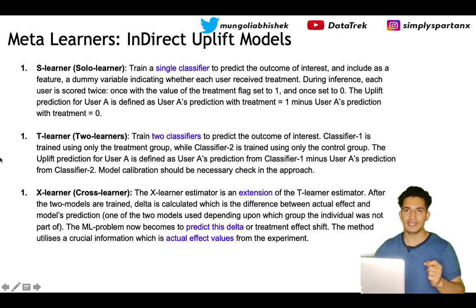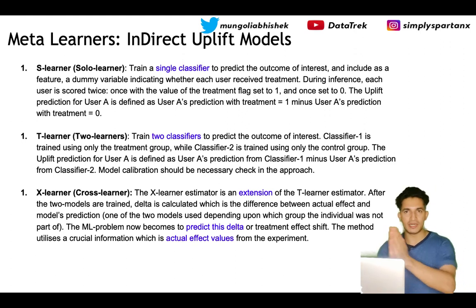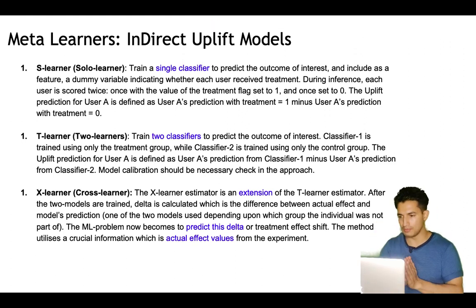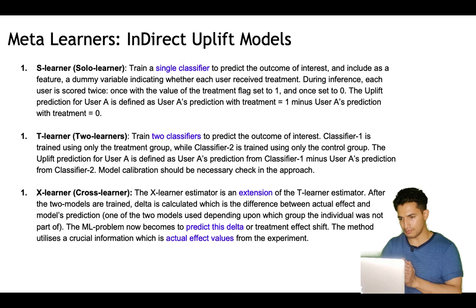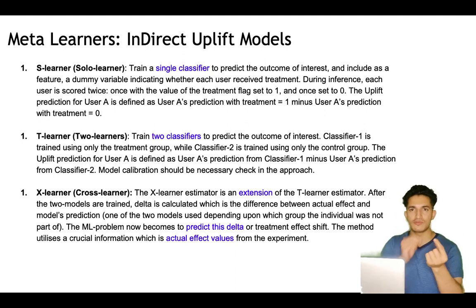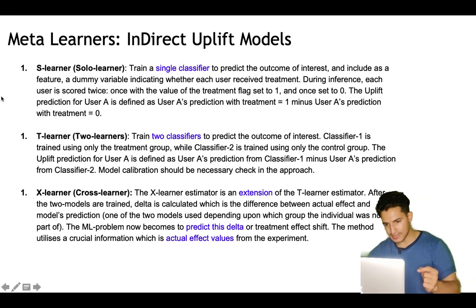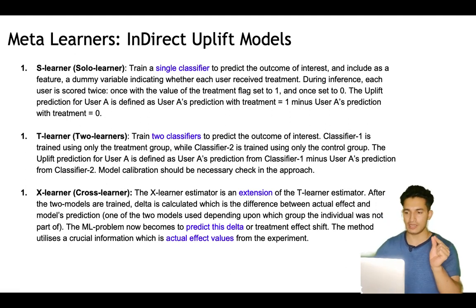During inference, each user is scored twice: once with the treatment flag equal to one and once set to zero. So we have trained a model on all users — a user can be part of treatment or control — and we detect whether the purchase happened or not, or whether a drug was effective. The target will be the effectiveness or order/buy, and in the data we use all user features along with one variable indicating whether the user was part of treatment or control.